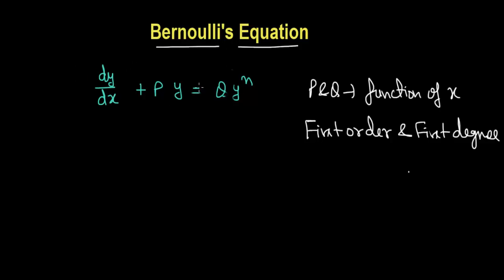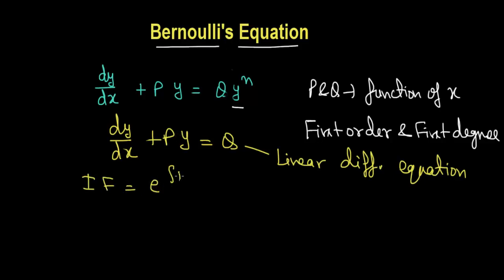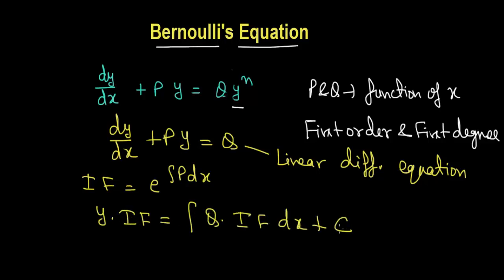To solve Bernoulli's equation, we remove the y^n term from the right-hand side to get the form dy/dx + Py = Q, which is a linear differential equation. We then find the integrating factor (IF) = e^(∫P dx), and the solution is y·IF = ∫(Q·IF) dx + C.